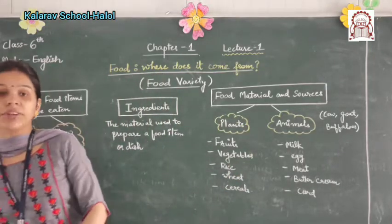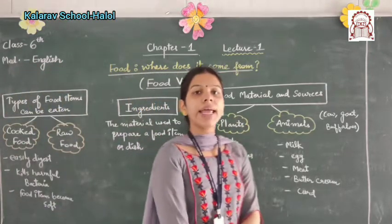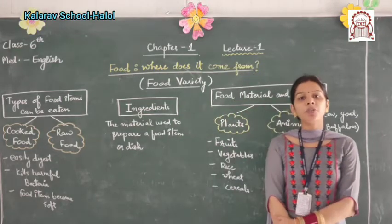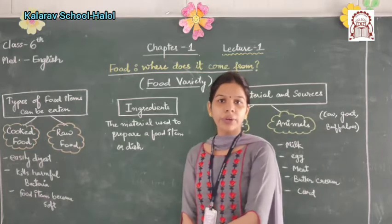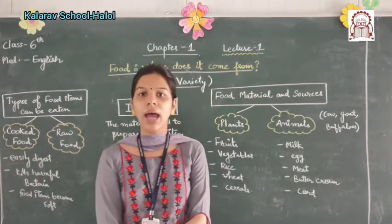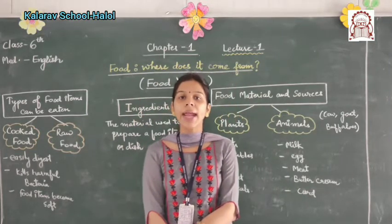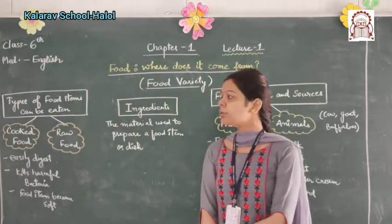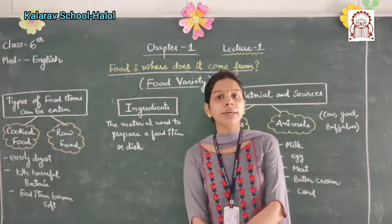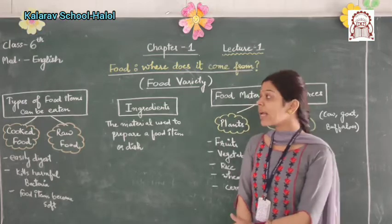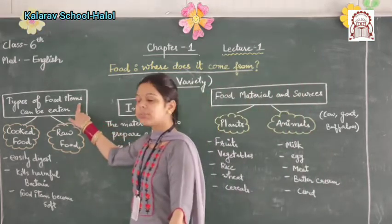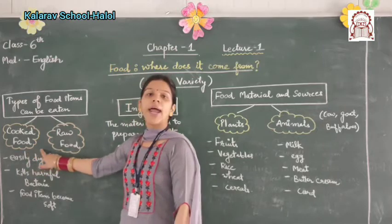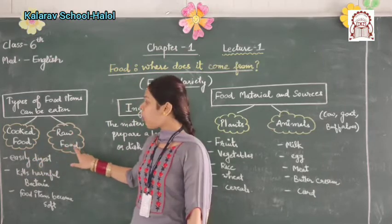There are different kinds of food like seasonal vegetables and seasonal foods which provide us different nutrients to remain healthy and fit. There are different types of food items that can be eaten. I have classified these food items into two categories: number 1, cooked food, and number 2, raw food.